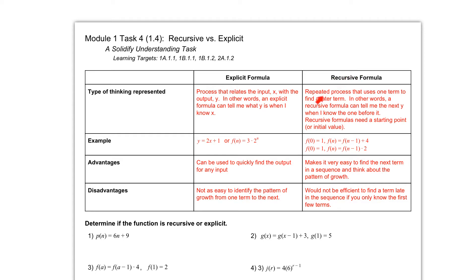Whereas in a recursive formula, this is a repeated process that uses one term to find a later term. In other words, a recursive formula can tell me the next y when I know the one before it. So I need to have that previous one, and it's almost like filling out a table where I have one term, and then I'm going to continually do the next thing to get to the next term.